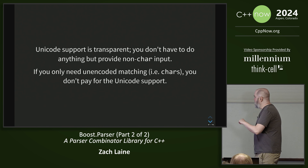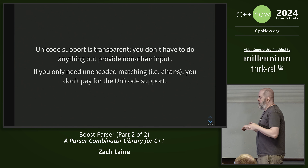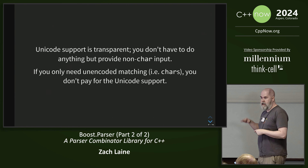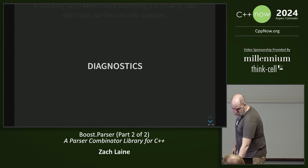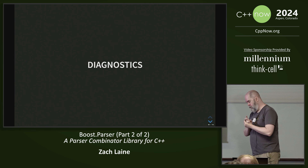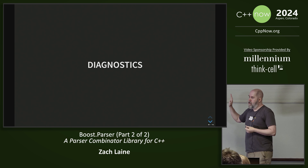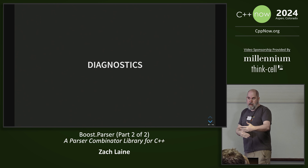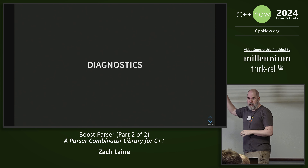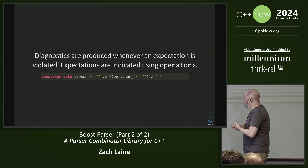Let's talk about diagnostics — there are a couple of different kinds of error reporting that are interesting. This one is the user-facing one: you do a parse, something failed, you want to produce output that someone who wrote the input can use to fix their input. Later on we'll talk about more debugging tools for when we're writing parsers. Diagnostics come from expectation points — this is something I mentioned before when we were talking about the set of operator overloads.